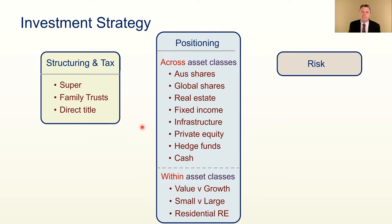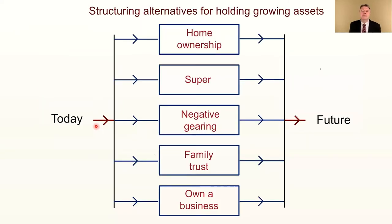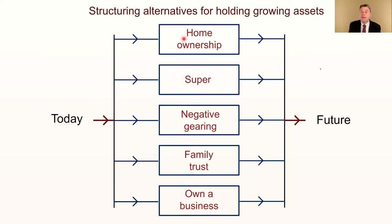To explain structuring and tax, consider how we grow wealth from today into the future. Households accumulate equity in their home by paying down their mortgage and may use that equity later for investments. Some people get stuck there and never move on to other structures. Everyone has super because it's compulsory — the 10% of income up to $27,500 is the concessional part. There's also the after-tax non-concessional part of super.